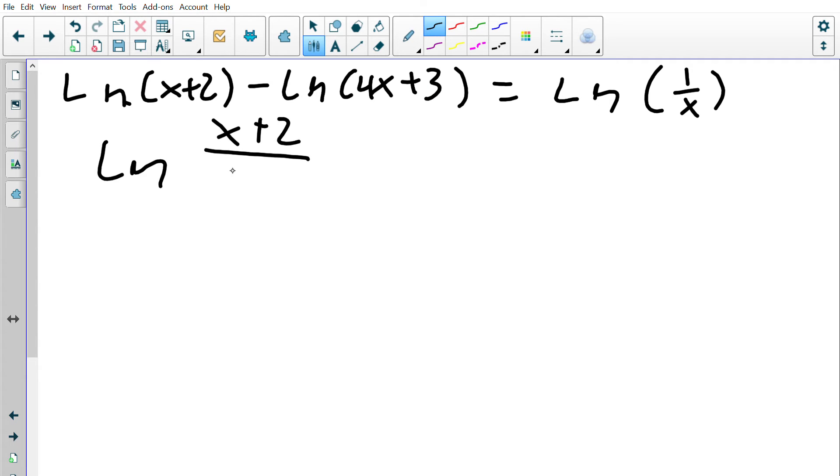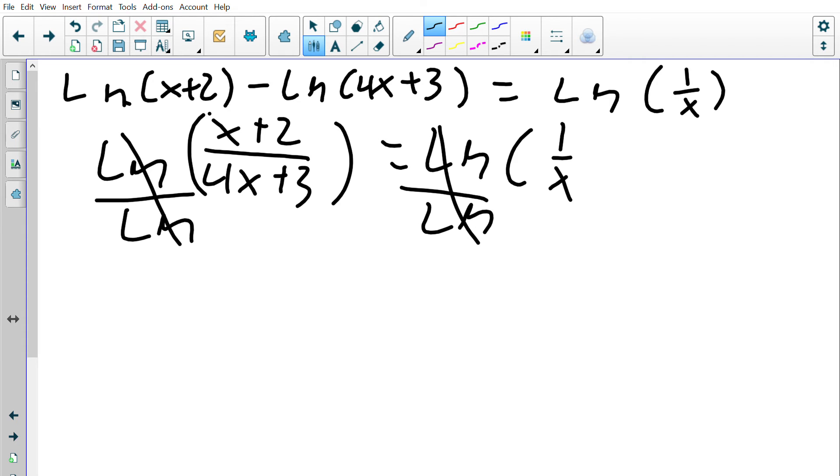And my second term goes in my denominator. Then I'm going to divide both sides by natural log. This will make them cancel, and I'm left with x plus 2, and then 4x plus 3 is equal to 1/x.